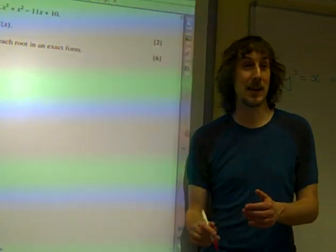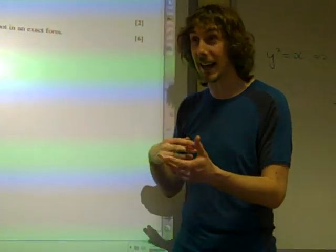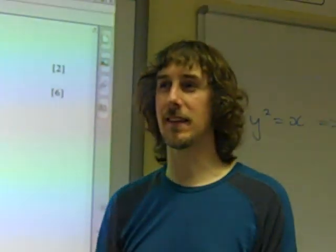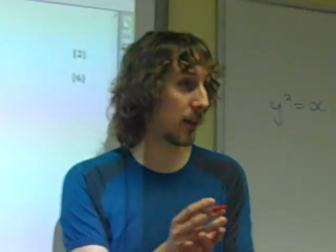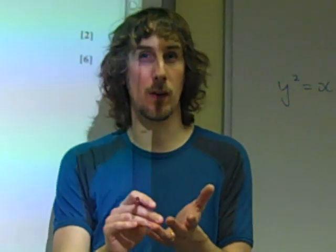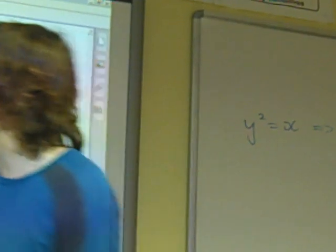Right, so use the factor theorem. It just wants us to try subbing in some values of x to see if we can find one that gives us an answer of zero. We can try anything we like, except there's a plus 10 at the end here, so it makes sense for us to try values that are factors of 10. So kind of 1, 2, 5, even 10. Let's see what we can try.